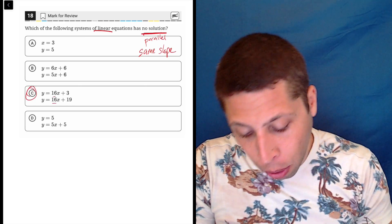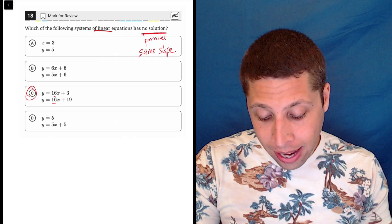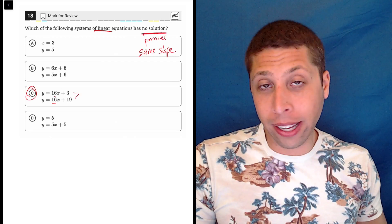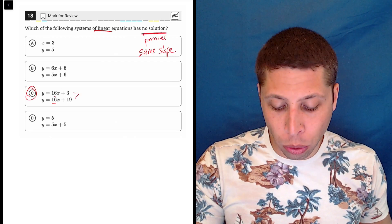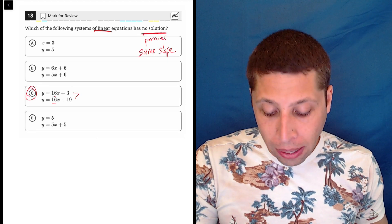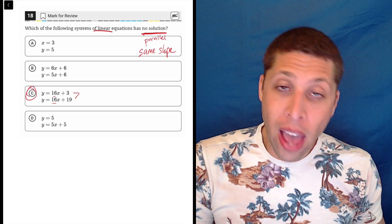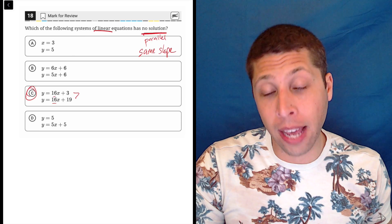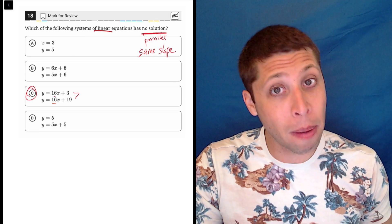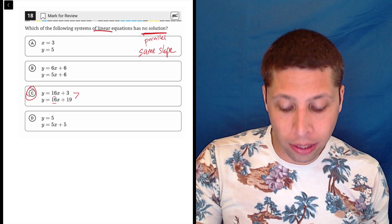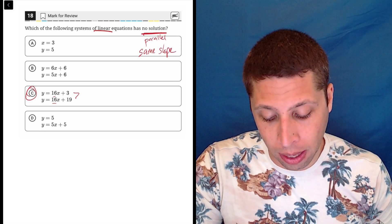We're looking for a case where the m's are the same. That happens in choice C, because both of the slopes are 16. But we need to double-check the b's are different, because if we had the same b, it would actually just be the same line with infinitely many solutions. That could come up on an SAT question. Luckily here, there's only one choice where they have the same slope.